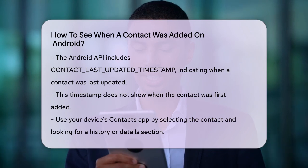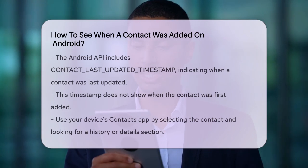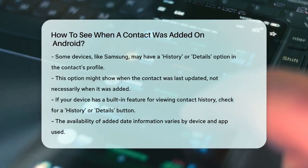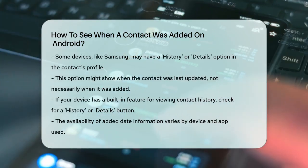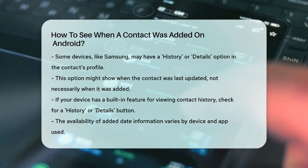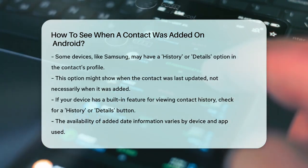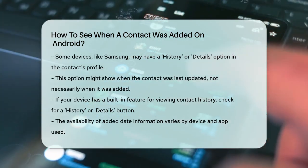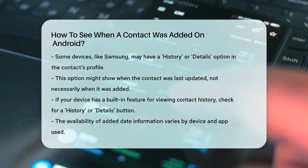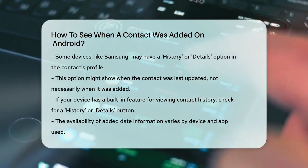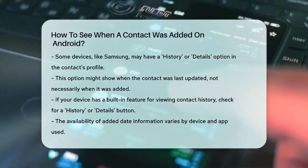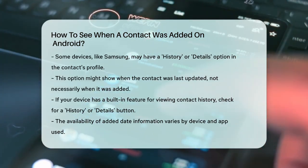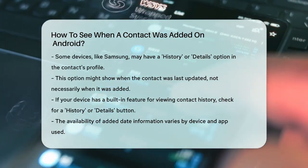If you're using a device with a built-in feature to view contact history, here's what you can do: open the Contacts app, find the contact, and check if there's a history or details button. Tap on this button to see if it displays any information about when the contact was added.